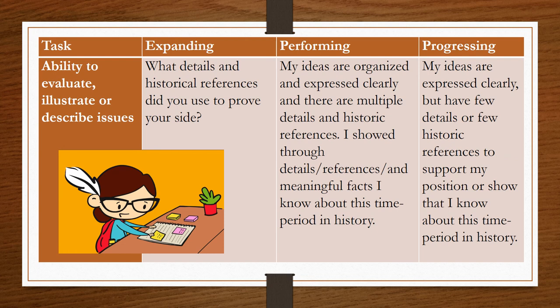The next part we will be grading is your ability to evaluate, illustrate, or describe issues. We're going to ask you: what details and historical references did you use to prove your side? If you are choosing the side to go west, you need to provide details and historical references that support and prove your side. If you're in the performing category, your ideas are organized and expressed clearly and there are multiple details and historic references showing you know about this time period in history.